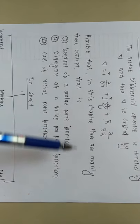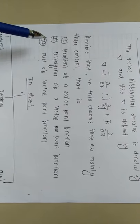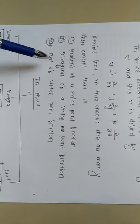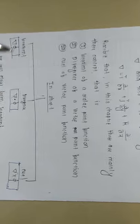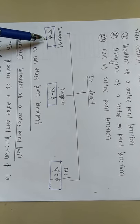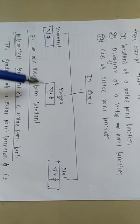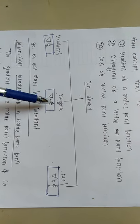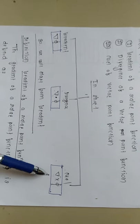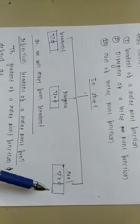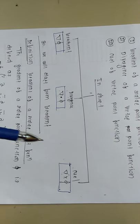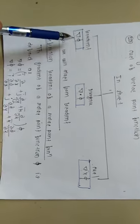In this unit, there are mainly three concepts: first is gradient, second is divergence, and third is curl. In short, gradient is del applied to any scalar function f or phi; divergence is del dot product with a vector; and curl is del cross f. Divergence uses the dot product and curl uses the cross product. We will start from gradient.